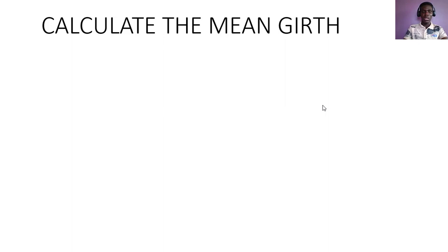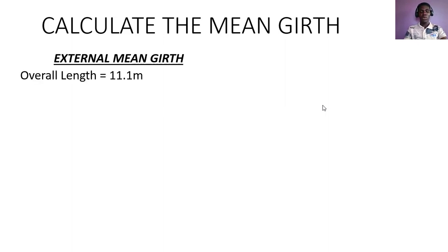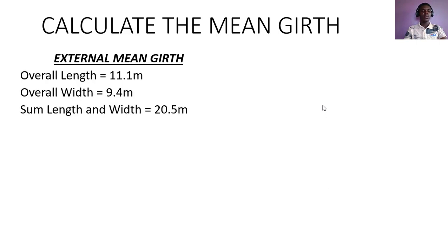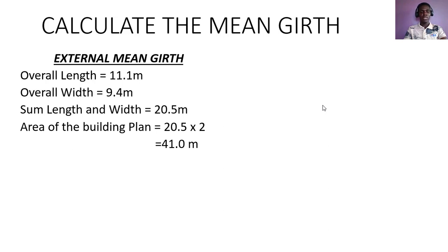To calculate the external main guard, we have the overall length as 11.1 and the overall width as 9.4 from the building plan. We sum those up to get 20.5, then multiply 20.5 by 2 to get the overall perimeter of the building plan. After multiplying by 2, we get 41.0 meters. That's the perimeter of the building plan.